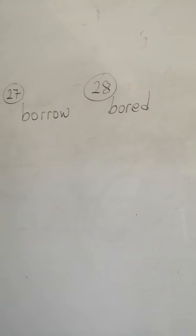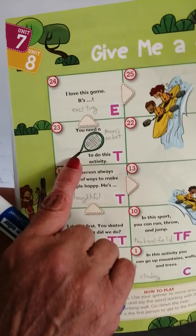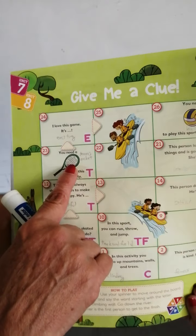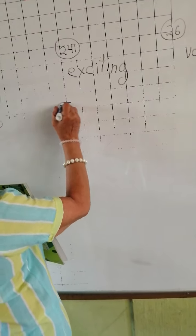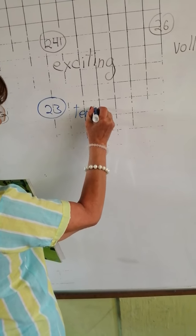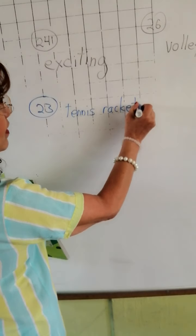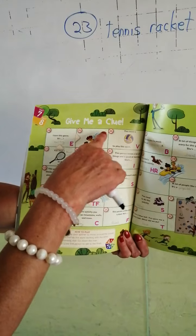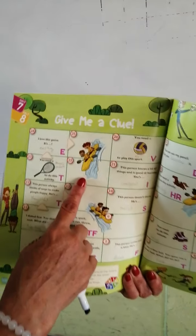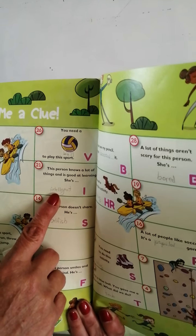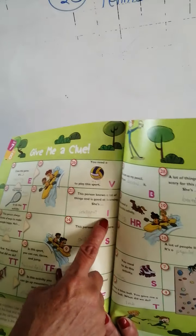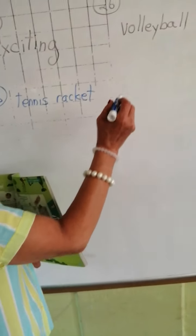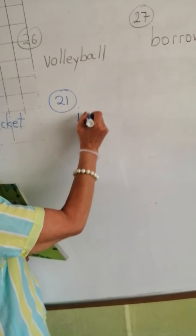Number 23: you need this to do this activity — yes, it's a tennis racket! Write 'tennis racket' in number 23. And in number 22, do you remember? They are kayaking and they go down. Number 21: this person knows a lot of things and is good at learning. She is — starts with I. Intelligent! Write 'intelligent' in number 21.